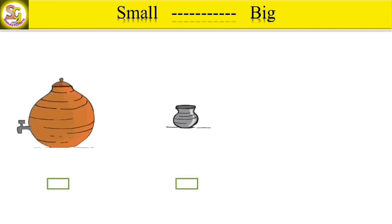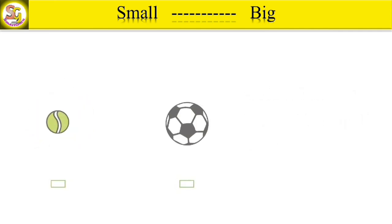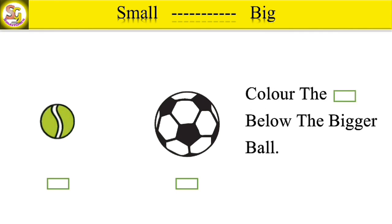Third one. Look at the picture. Now color the square below the smaller vessel. Fourth one. Look at the picture. Now color the square below the bigger ball.